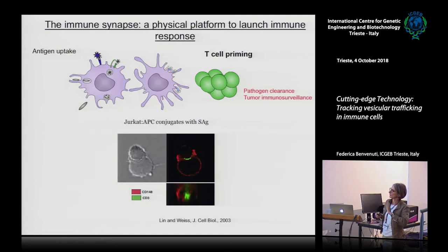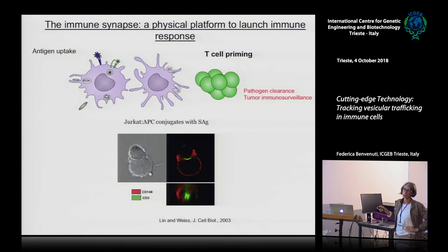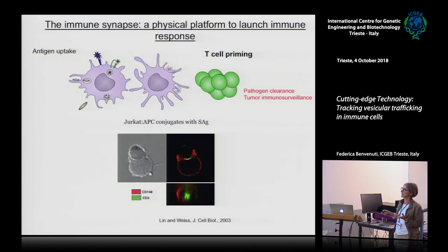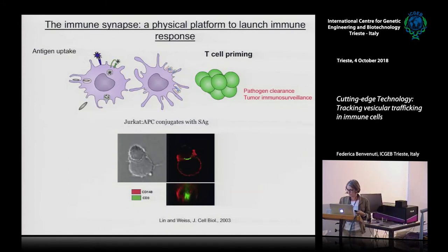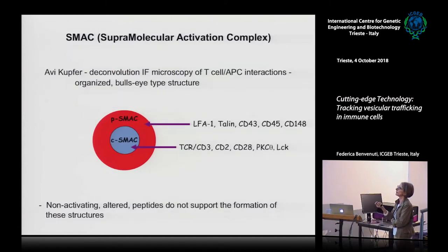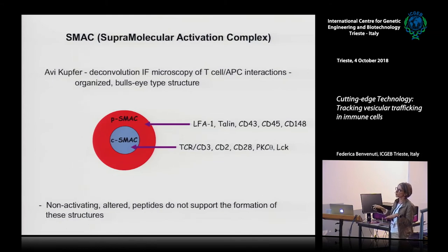I'll give a short historical perspective. We are talking about the initial priming of the T-cell. What people discovered around 2003 is that when these two cells interact, there is a reorganization of molecules in the synaptic region, whereby signaling molecules are clustered in the middle, whereas accessory and adhesion molecules are pushed to the periphery. This was called the bull's-eye structure: a central structure where signaling takes place, with adhesion molecules pushed away to favor signaling.